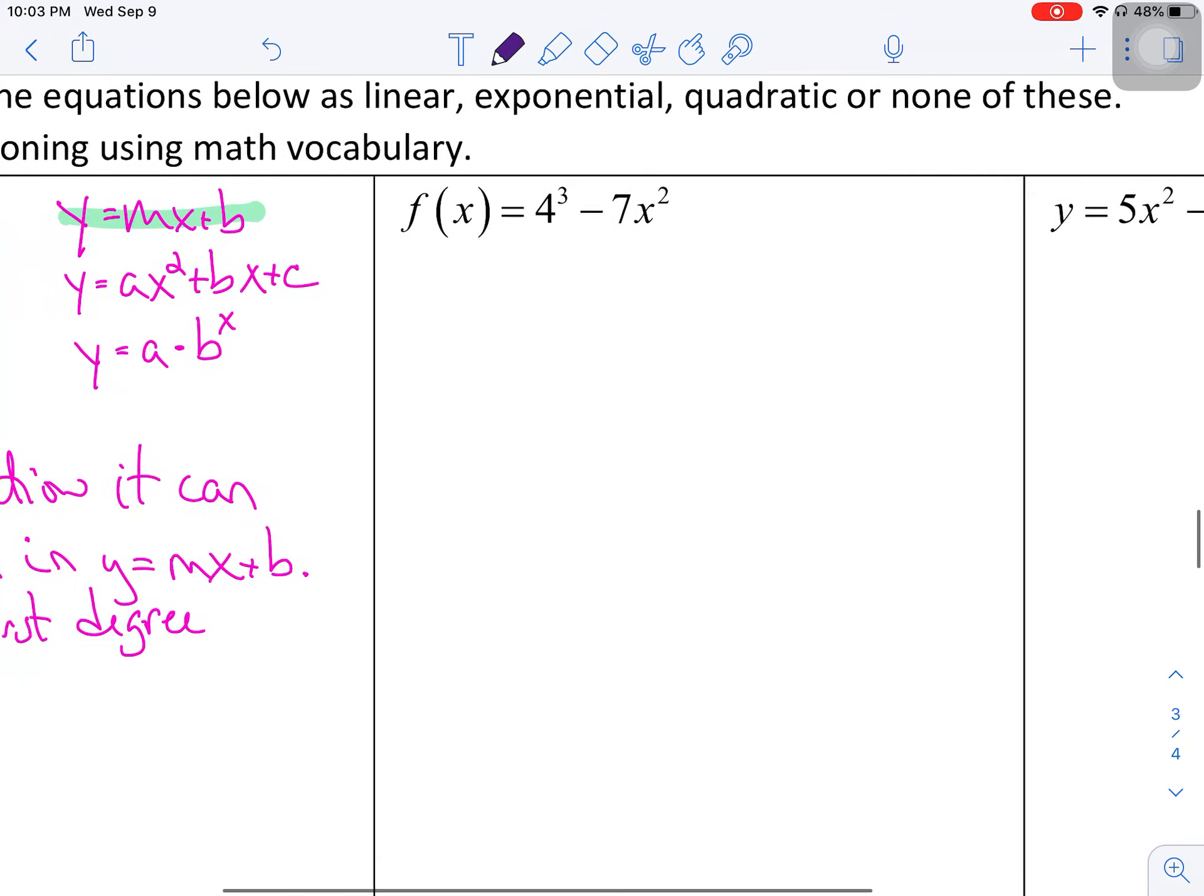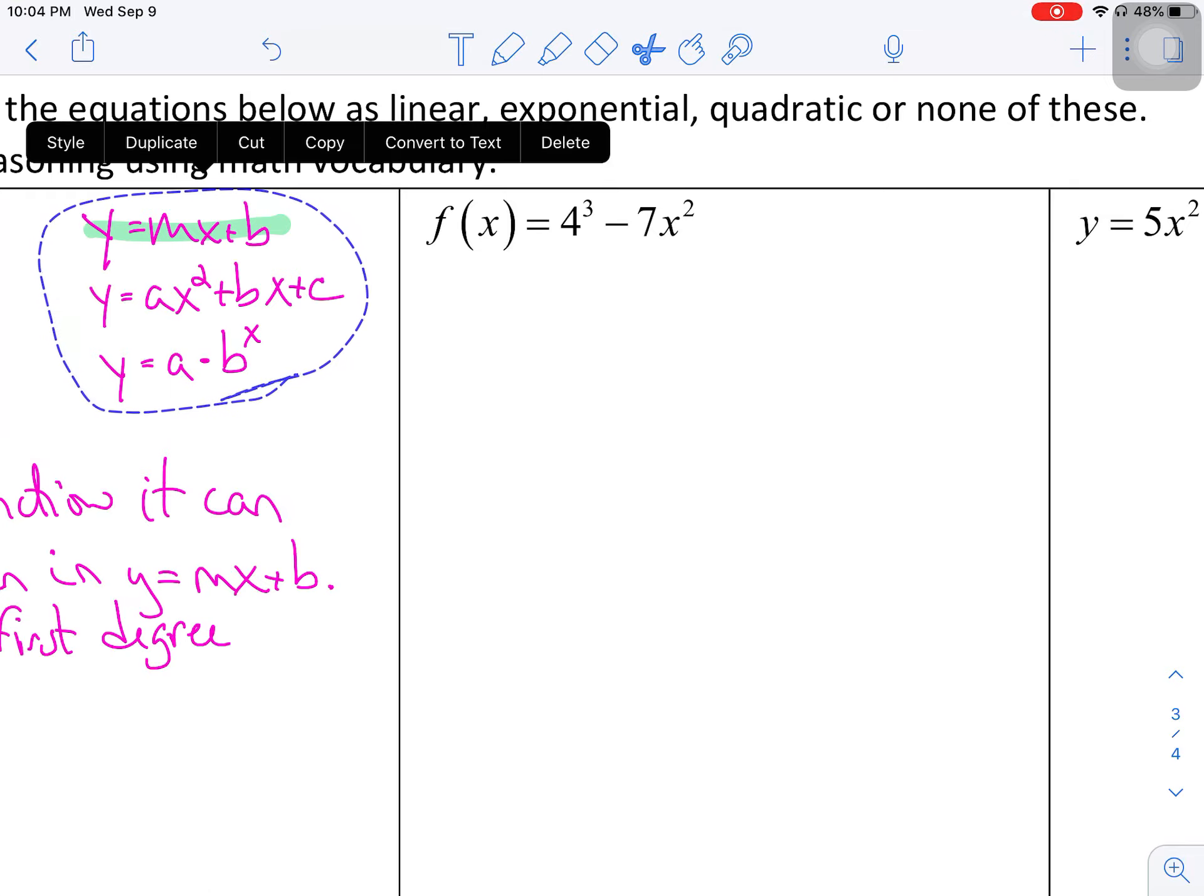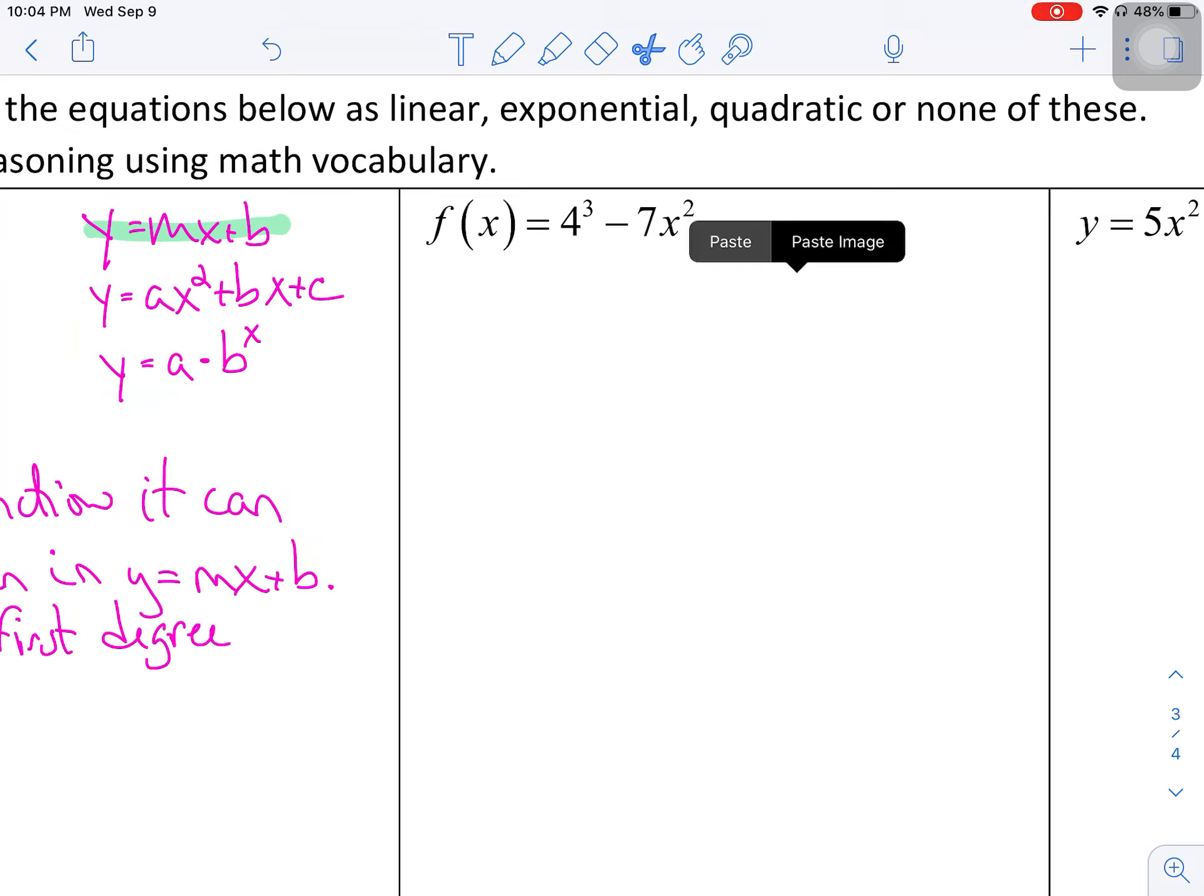So let's move on to the second example. We've got f of x is equal to 4 to the 3rd. I can throw that in a calculator and get 64 minus 7x squared. Let's go ahead and put the x squared first, which means it's going to be negative 7x squared. The 64 is positive, so plus 64.